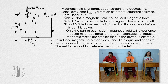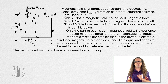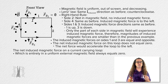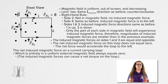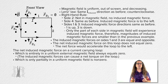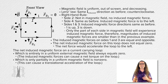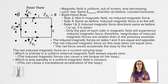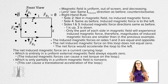We can now give the general statements: the net induced magnetic force on a current-carrying loop which is entirely in a uniform external magnetic field always equals zero — however, those induced magnetic forces can cause a net torque on the loop. And the net induced magnetic force on a current-carrying loop which is only partially in a uniform magnetic field is non-zero, and this non-zero net induced magnetic force can cause a translational acceleration of the loop. Thank you very much for learning with me today — I enjoyed learning with you.